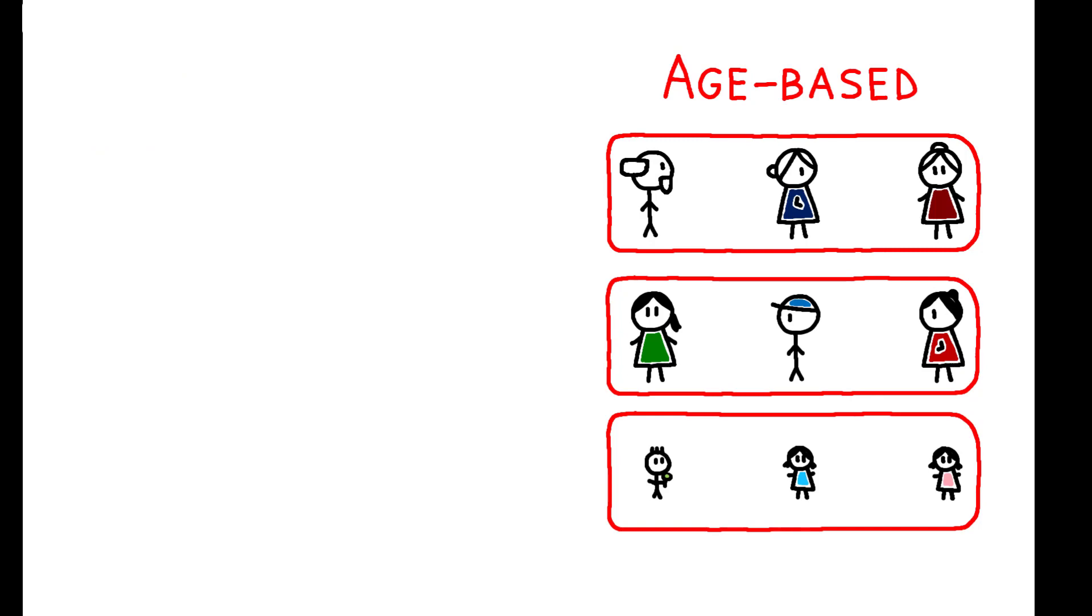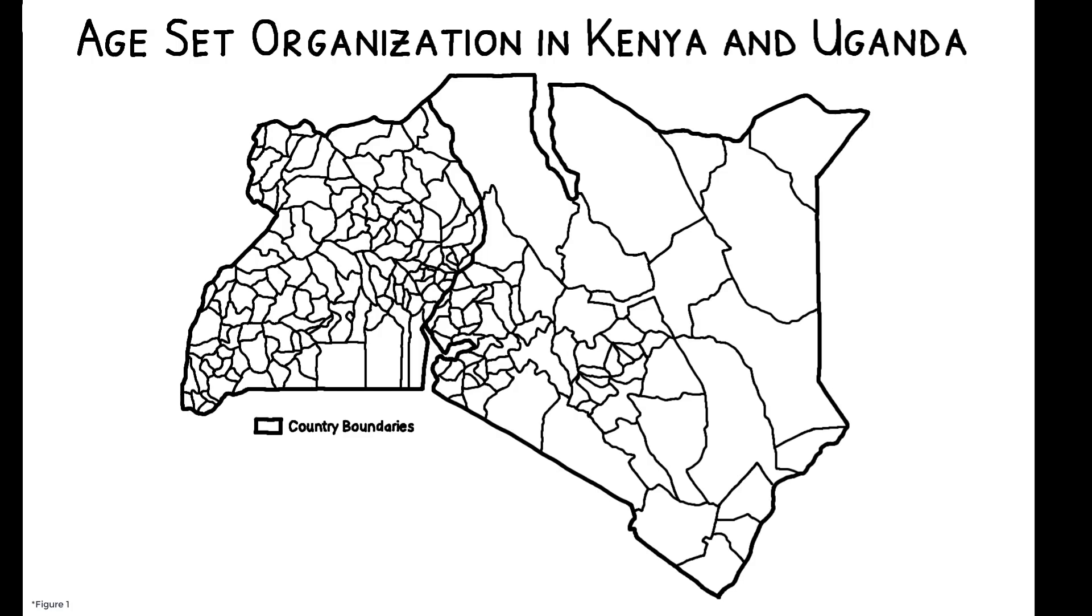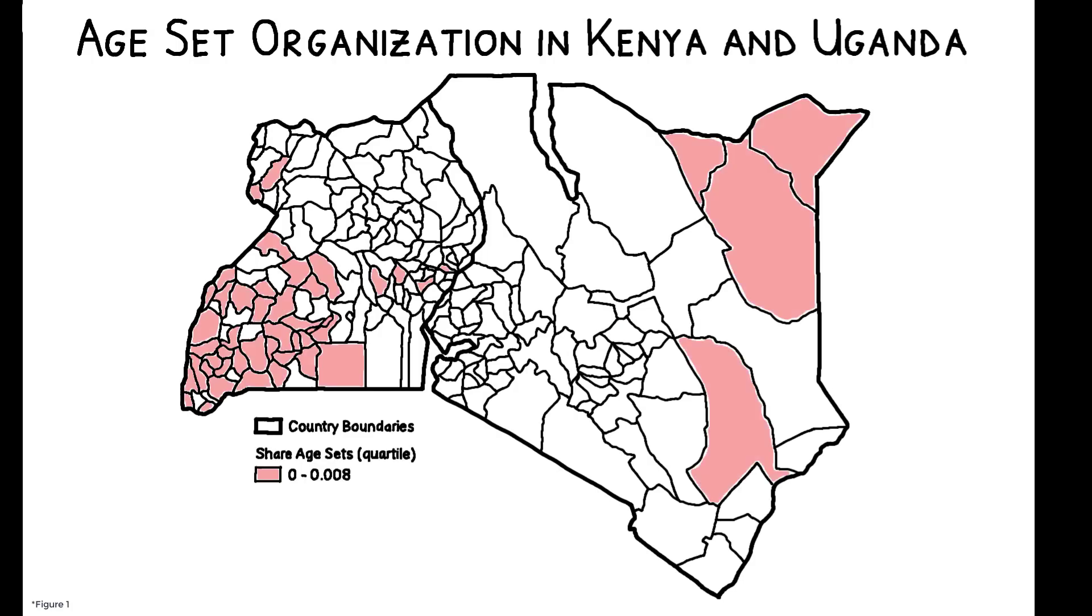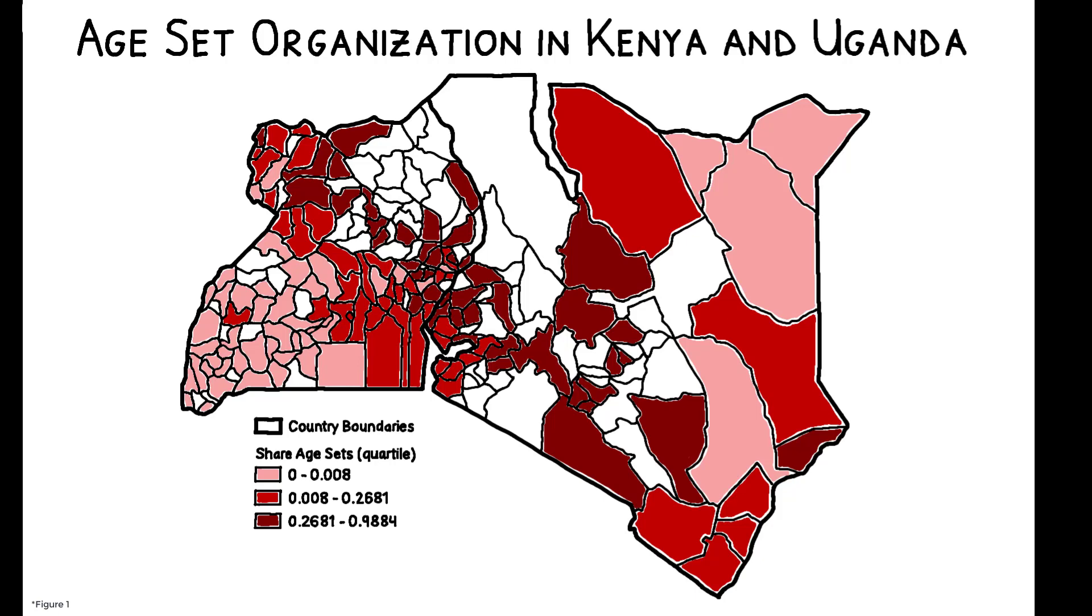While uncommon in the West, age-set organization exists around the world and is particularly prevalent in Africa. There, the authors estimate that over 200 million people live in ethnic groups in which age sets are an important part of social organization.